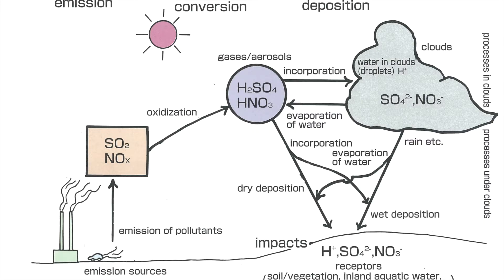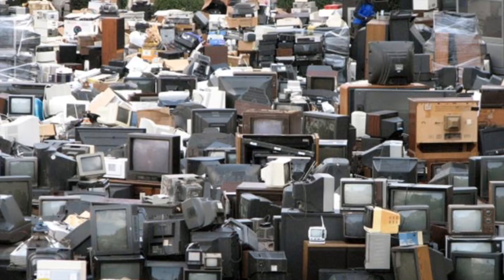For example, with acid rain, emissions from industries and automobiles — including sulfur dioxide and nitrogen oxides — react with atmospheric water or moisture, forming sulfuric acid and nitric acid. These acids come down as acid rain, with rainwater containing heavy amounts of acid, which is very dangerous. There is also a new challenge of electronic waste, where components are very small, making separation and recycling more difficult.